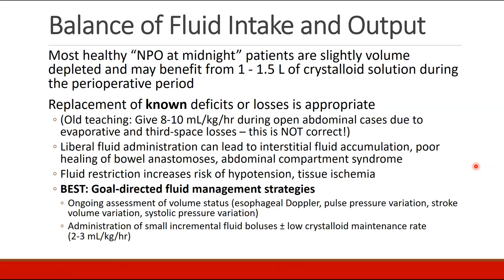Most of our patients in the operating room are NPO at midnight, and as a result they are slightly volume depleted and may benefit from a small administration of crystalloid solution — about a liter of fluid — during the perioperative period. Some older teachings suggested patients with open abdomens should receive 8 to 10 milliliters per kilogram per hour due to evaporative and third space losses, but this is not correct. Giving too much fluid can lead to accumulation in the interstitium, poor healing of bowel anastomosis as tissue swells, and even abdominal compartment syndrome.